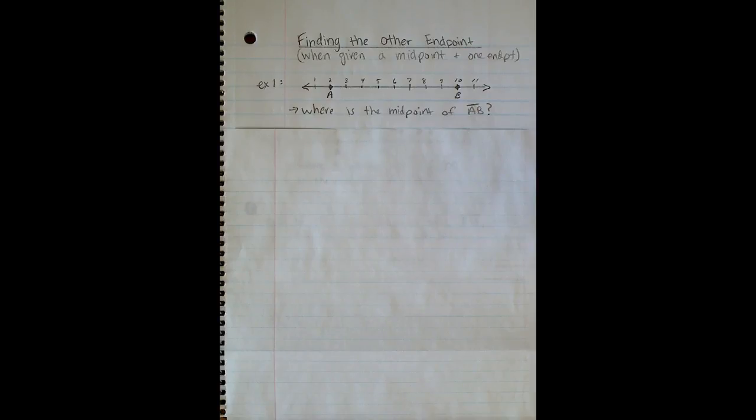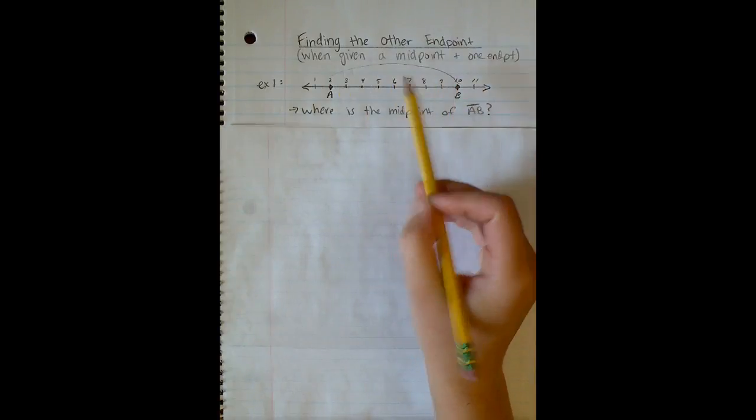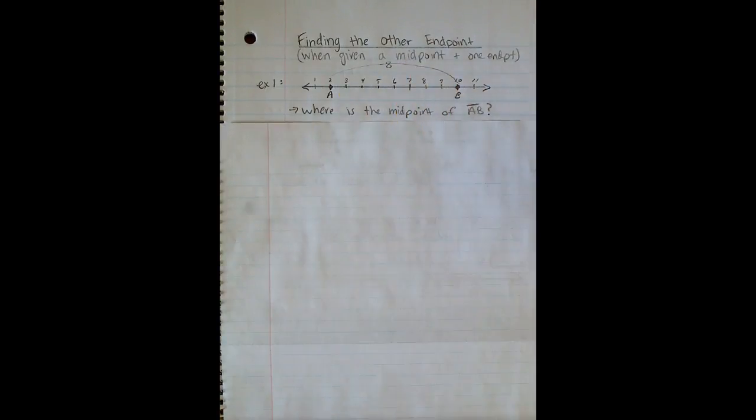So it's pretty easy for us to identify where the midpoint of this segment would be. Like we said in the last video, a midpoint is halfway between the two endpoints. It creates two smaller congruent segments. So if I were to take the total distance from 2 to 10, that total distance would be 8.